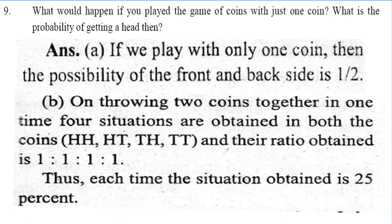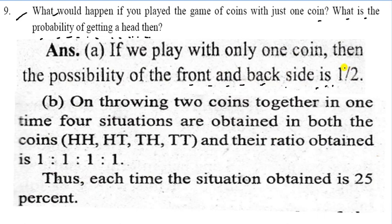Question 9: What would happen if you played the game of coins with just one coin? The probability of getting heads is 1/2, because the total number of favorable outcomes is 1 and the total number of outcomes is 2. On throwing two coins together at one time, four situations are obtained: head-head, head-tail, tail-head, and tail-tail. The ratio is 1:1:1:1, so each situation has a 25% probability.